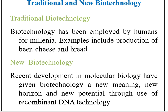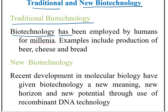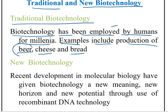There are two types of biotechnology: traditional biotechnology and new biotechnology. In traditional biotechnology, biotechnology has been employed by humans for millennia. Examples include the production of beer, cheese, and bread. This means biotechnology is not new; it is quite old. Beer, cheese, and bread were products of traditional biotechnology.